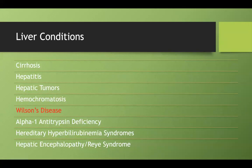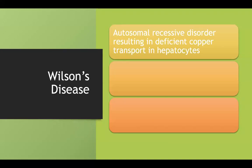So now let's switch it up. Instead of talking about iron overload, we're going to talk about Wilson's disease, which is essentially copper overload. Like hemochromatosis, this is also an autosomal recessive disorder, and it results in deficient copper transport in our liver cells.